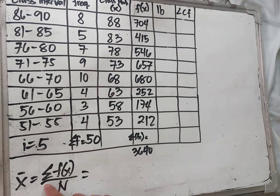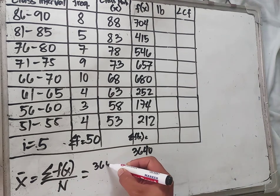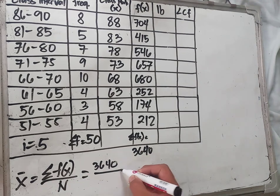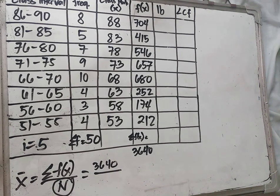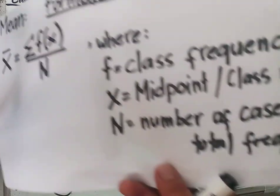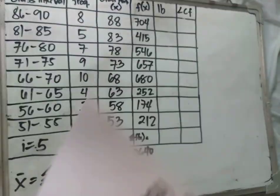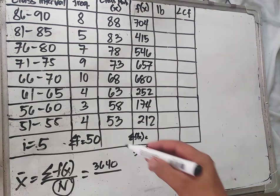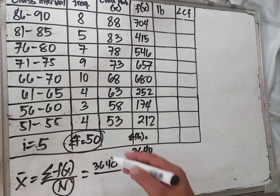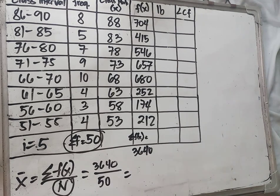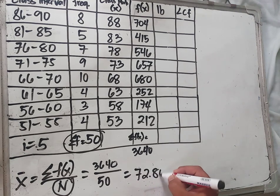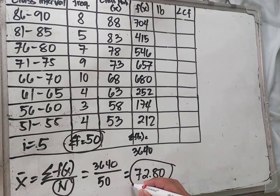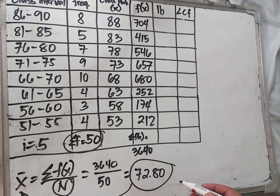We substitute into the formula: the total sum is 3640 over n. The total frequency n is 50. So 3640 divided by 50 equals 72.80. That is the value of the mean for grouped data: 72.80.